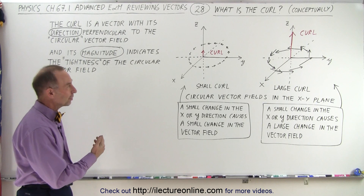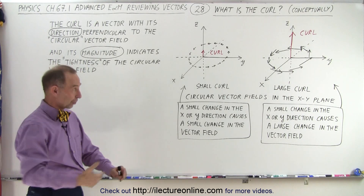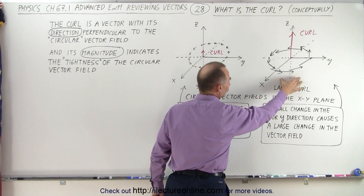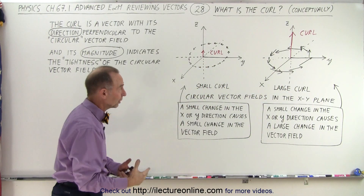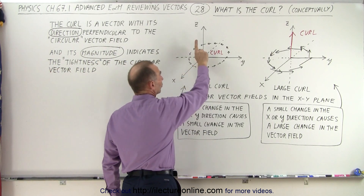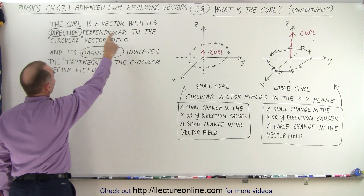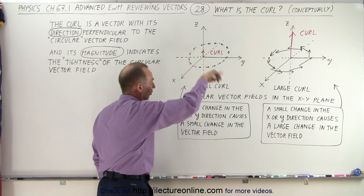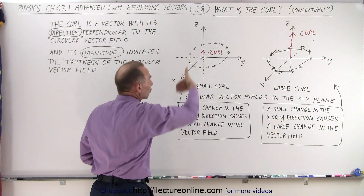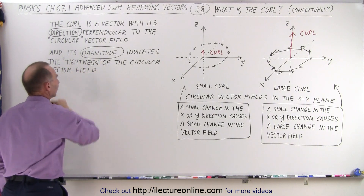Now what does the curl really mean? Notice I drew two vector fields — they're both circular, both in the xy-plane, and they both circle the z-axis. Notice that the magnitude of the vector field here is much smaller, and here much larger. This will cause a much larger curl here and a smaller curl there. By definition, the curl is a vector drawn along the z-axis — a larger vector for the stronger field, a smaller vector for the weaker one. The direction is perpendicular to the circular vector field. Using the right-hand rule, you can curl your fingers in the direction of the vector field and your thumb will point in the direction of the curl.